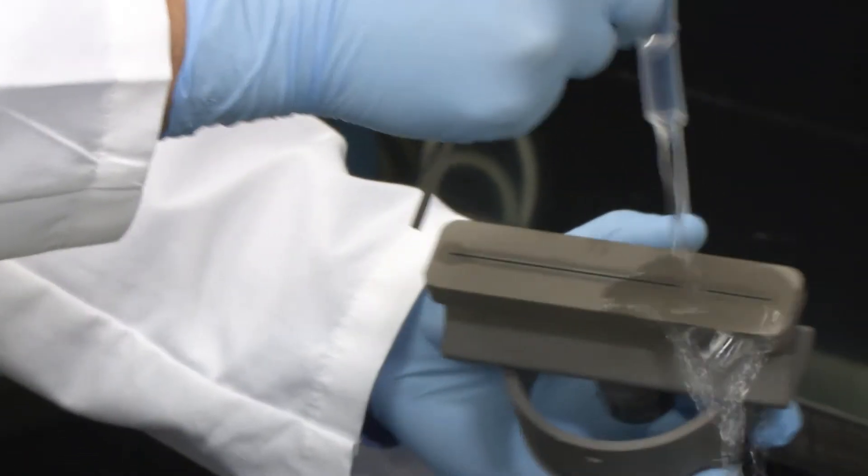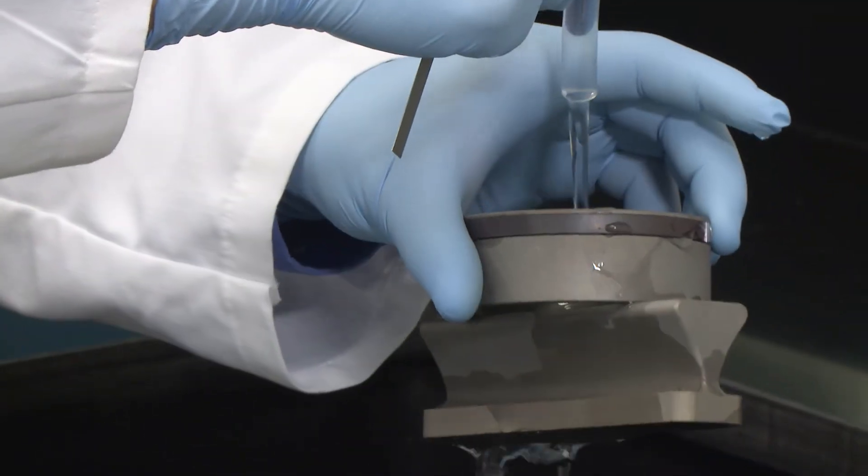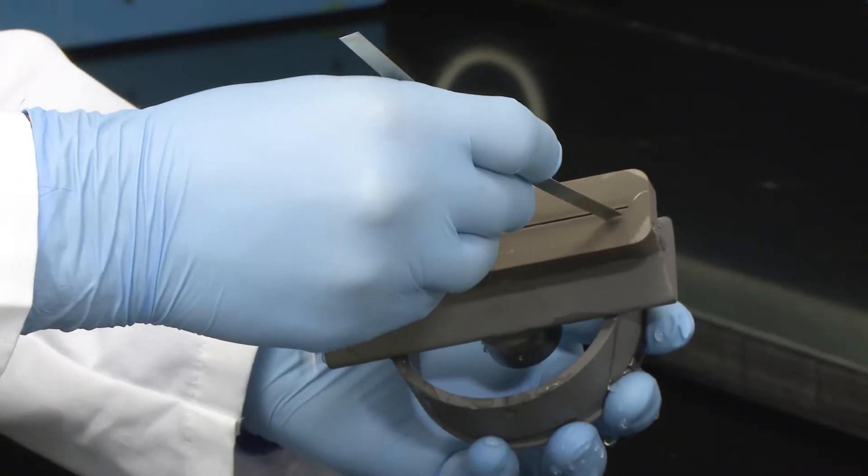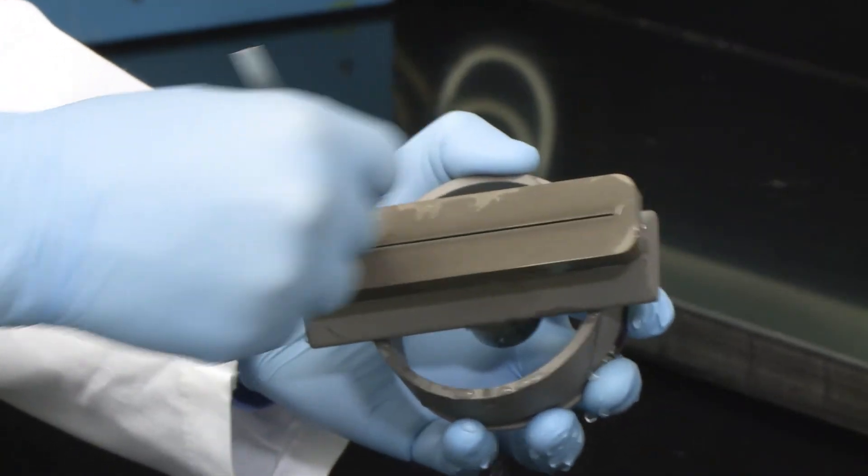After the burner head is cleaned, rinse the burner head well with deionized water and make sure that all scrapings are removed from inside and outside the burner head.